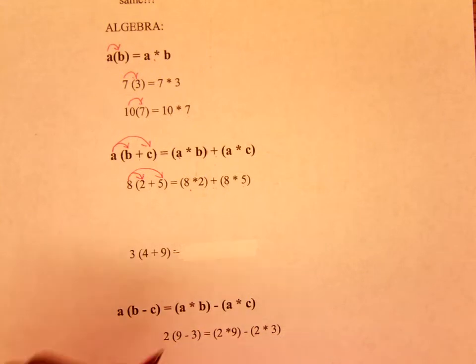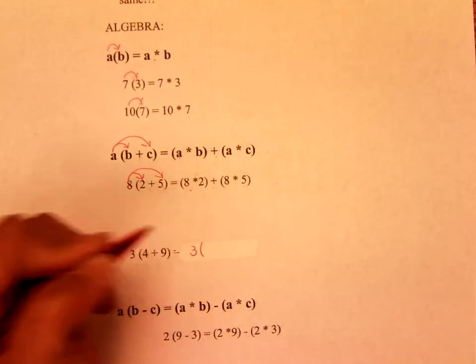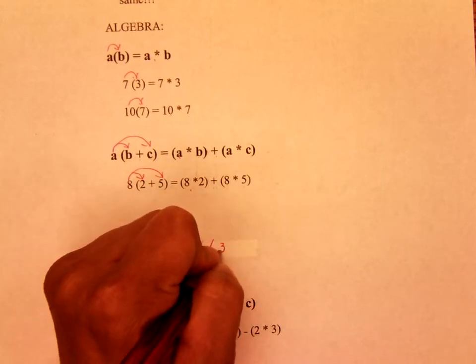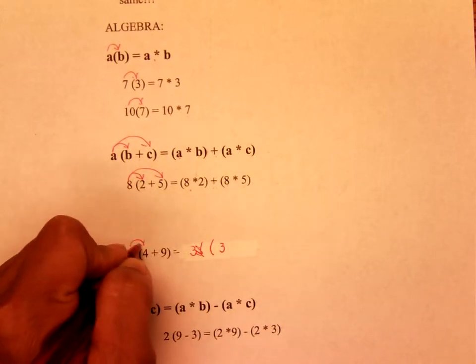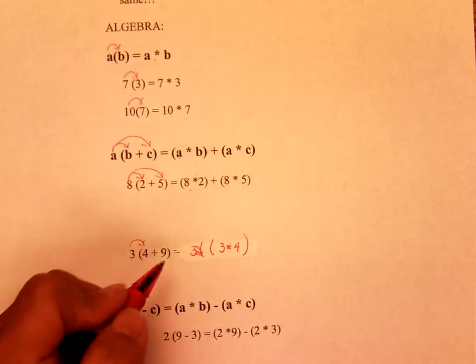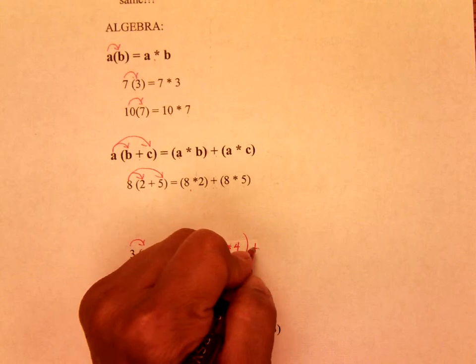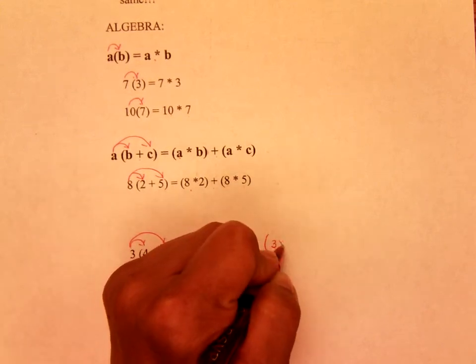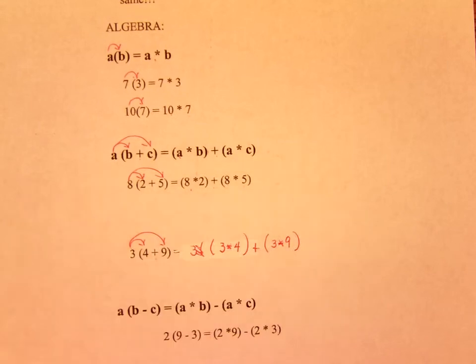So you should have written it as 3 parentheses, remember the first number, so it would be times 4, end of parentheses. There's a plus here, so you write plus, and then 3 times 9, end of parentheses.